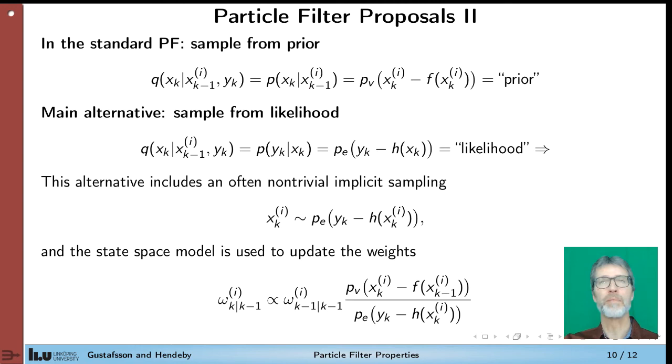So in the standard particle filter, we take the state space model as the proposal, namely the conditional probability density function of x_k given the previous state. So this is called sampling from the prior. So the main alternative is to utilize the fact that we can actually cheat here by looking at the next measurement when we take the samples of x_k. And that means that we can use the likelihood for sampling.